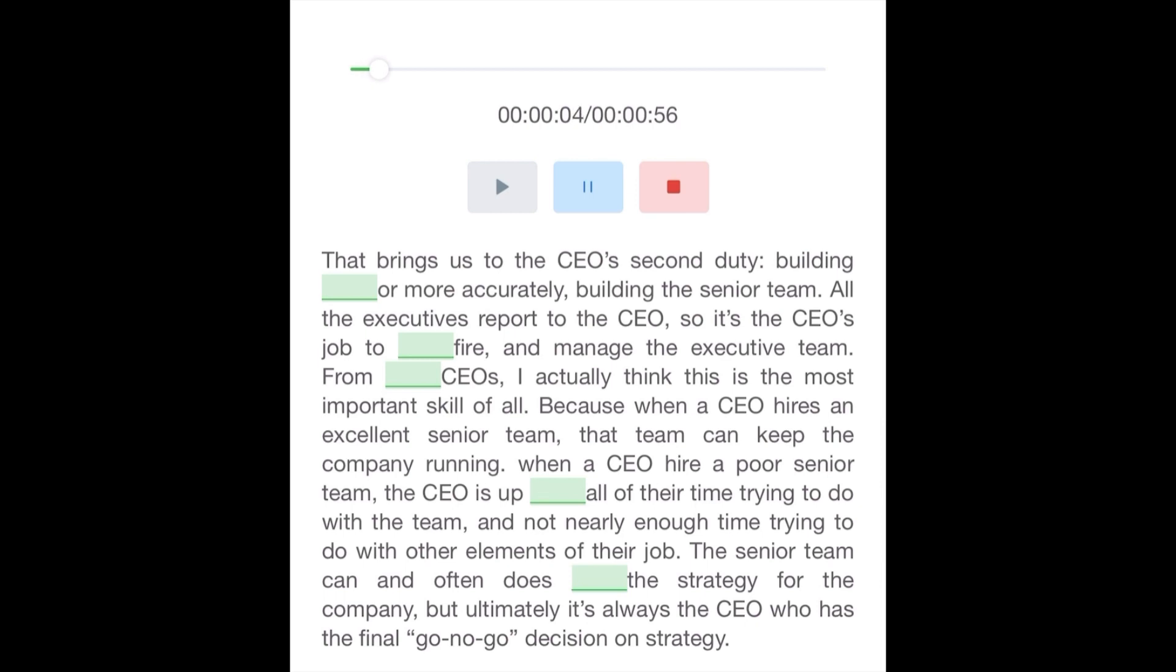That brings us to the CEO's second duty: building everyone, or more accurately, building the senior team. All the executives report to the CEO, so it's the CEO's job to hire, fire, and manage the executive team. From coaching CEOs, I actually think this is the most important skill of all.